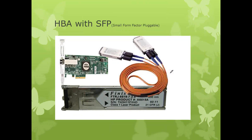Now let's look at the HBA with a different component called an SFP — Small Form Factor Pluggable. This component can be removed; both the GBIC and the SFP are hot-pluggable modules. They are also called transceivers because they have a transmission port and a receiving port. The SFP does exactly what the GBIC does, but supports higher speeds — more than 1 GB per second.